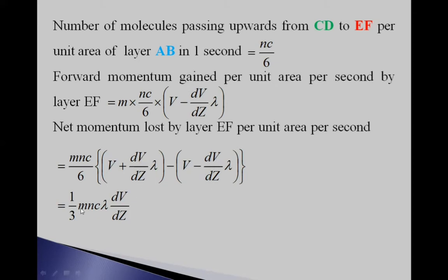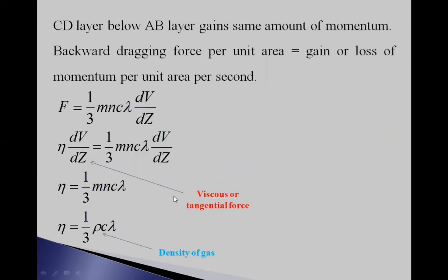After simplification, we get (1/3)·M·N·C·λ·(dU/dZ). The CD layer below AB gains the same amount of momentum. The backward dragging force per unit area equals the gain or loss of momentum per unit area per second, giving (1/3)·MNCλ·(dU/dZ). Since the viscous force is η·(dU/dZ), we get η = (1/3)·MNCλ, or equivalently η = (1/3)·ρCλ, since MN is the density ρ of the gas.